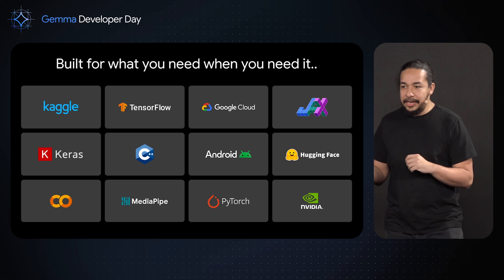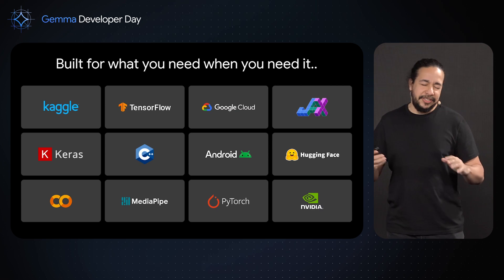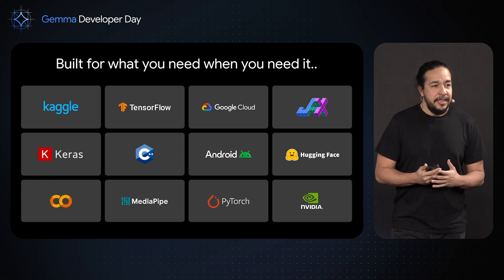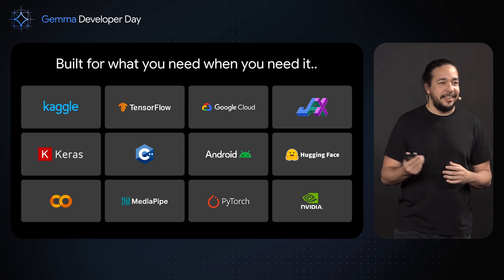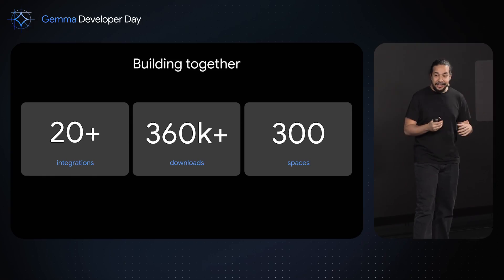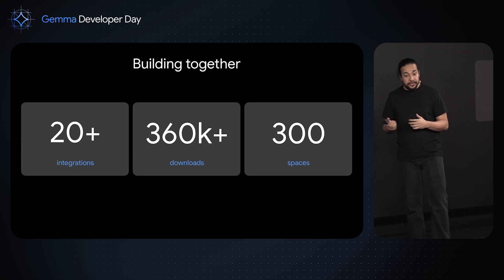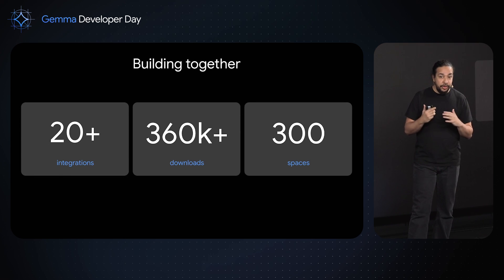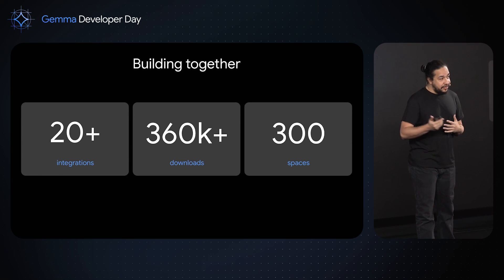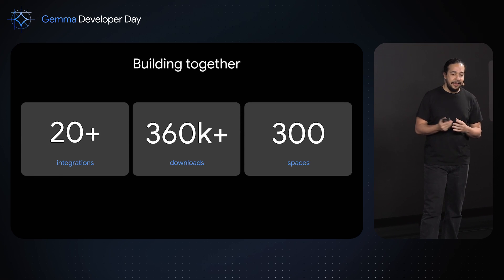So we launched them in all our platforms, our AI tooling and frameworks, in our cloud. We collaborated with our friends at Hugging Face and NVIDIA to make them even more available and even faster. And two days after launch, the community got the models and added another 20 other frameworks and platforms — many of which I didn't even know were so popular. The community just ran with it: sending PRs to GitHub repositories, more than 300,000 downloads, more than 300 spaces on Hugging Face. It became very popular, and I think part of it is because we tried to make this easy for you.